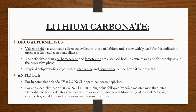For antidotes: for gastric disturbances, activated charcoal can be given. For hypertensive episodes, IV 0.9% NaCl or dopamine can be given. For enhanced elimination, 0.9% NaCl at 10 to 20 ml per kg bolus for maintenance of fluid rates. Another option is hemodialysis if there is severe exposure.